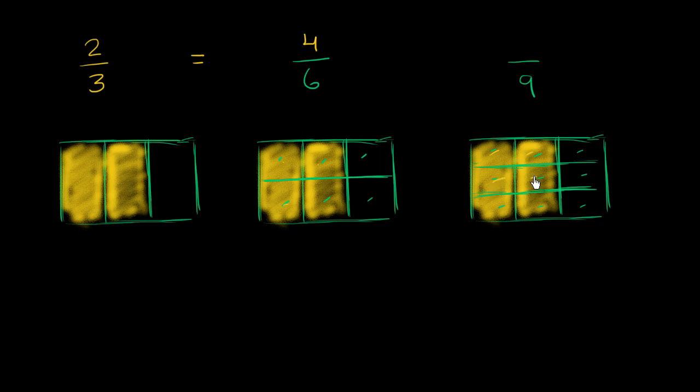And then which of those are actually shaded in? We have one, two, three, four, five, six. So 2 thirds, which is equal to 4 sixths, is also equal to 6 ninths. These are all three of these are equivalent fractions. 2 thirds, 4 sixths, and 6 ninths.